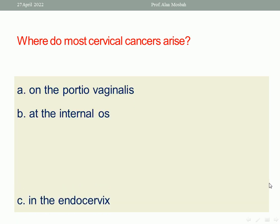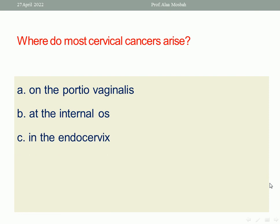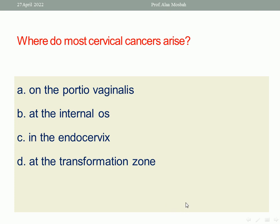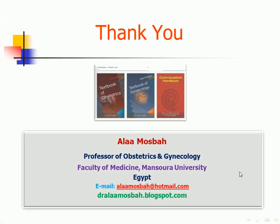Where do most cervical cancers arise? In the portio vaginalis, at the internal os, at the endocervix, or at the transformation zone. Of course, the commonest site for cervical cancer is the transformation zone, which is the area between the primary and secondary squamocolumnar junction. So the transformation zone is the best response. This is the last question.